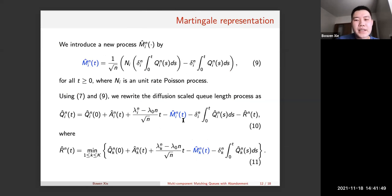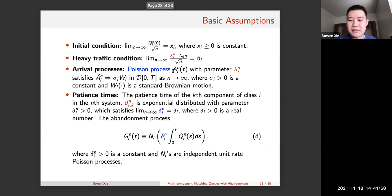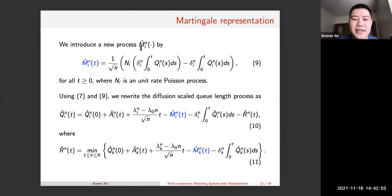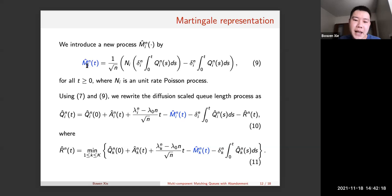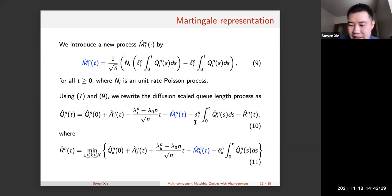We introduce a new process M̂_i, related to the abandonment process A. M̂_i represents the centering and scaling of the abandonment process, and we can prove that M̂_i is a Brownian motion with respect to the natural filtration defined in previous slides. Through subtraction and addition, the queue-length process can be represented as in equation 10, and the R̂^n process as in equation 11.